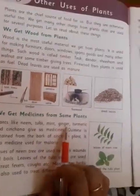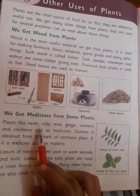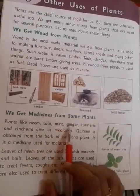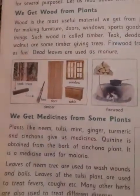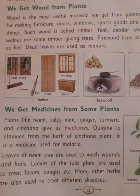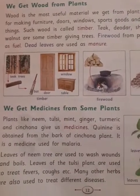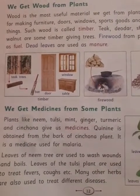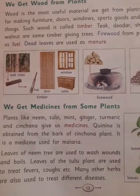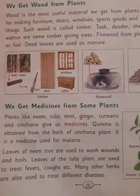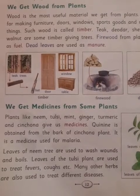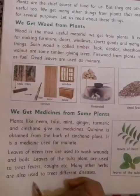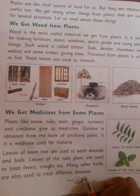We also get medicines from plants. Plants like neem, tulsi, mint, ginger, turmeric, and cinchona give us medicines. Quinine is obtained from the bark of the cinchona plant, and it is a medicine used for malaria. Leaves of the neem tree are used to wash wounds and boils. Leaves of the tulsi plant are used to treat fevers, coughs, etc. Many other herbs are also used to treat different diseases.